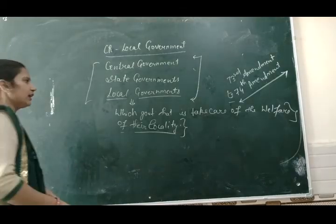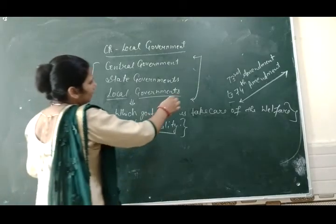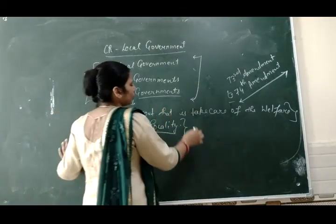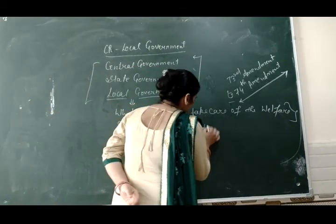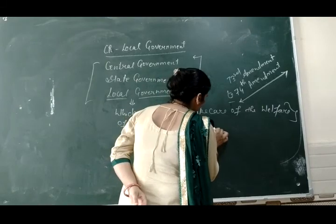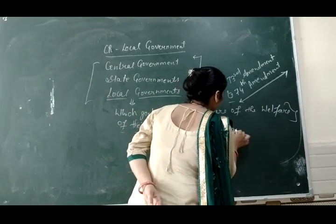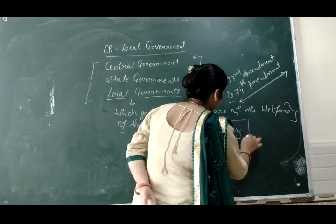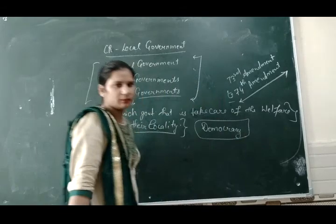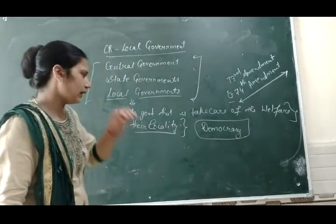It is believed that local knowledge and local interests are essential ingredients for democratic decision-making, and are also necessary for efficient and people-friendly administration. As we know, India has a democracy system. In India, a democratic government is there.